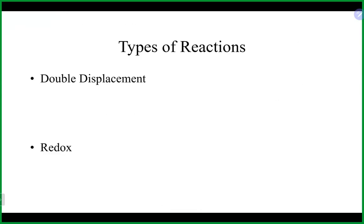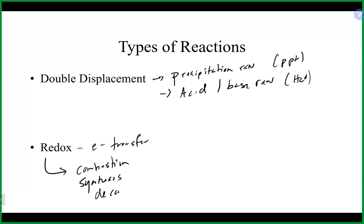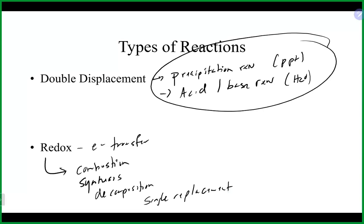We're going to focus on double displacement reactions: precipitation reactions, where a solid or precipitate is formed, and acid-base reactions, where water is formed. Redox reactions, which cover electron transfer, include the more specific classifications: combustion, synthesis, decomposition, and single replacement. We'll look more specifically at precipitation and acid-base reactions, including how we know whether or not we'll get a solid.